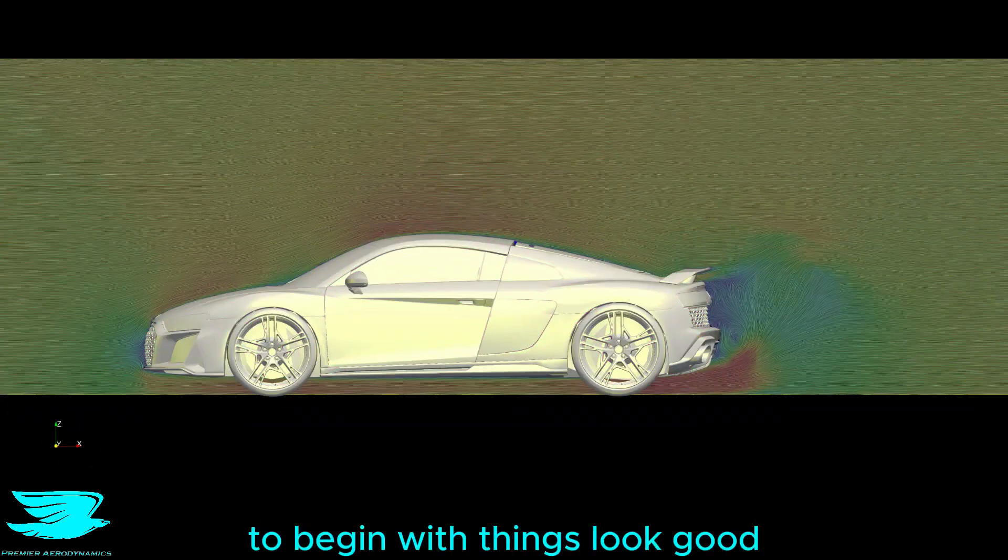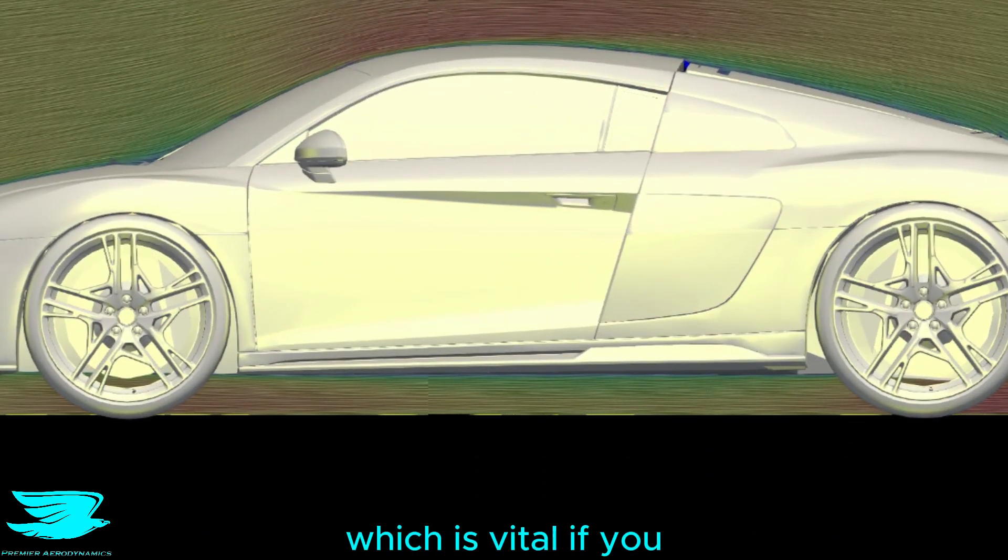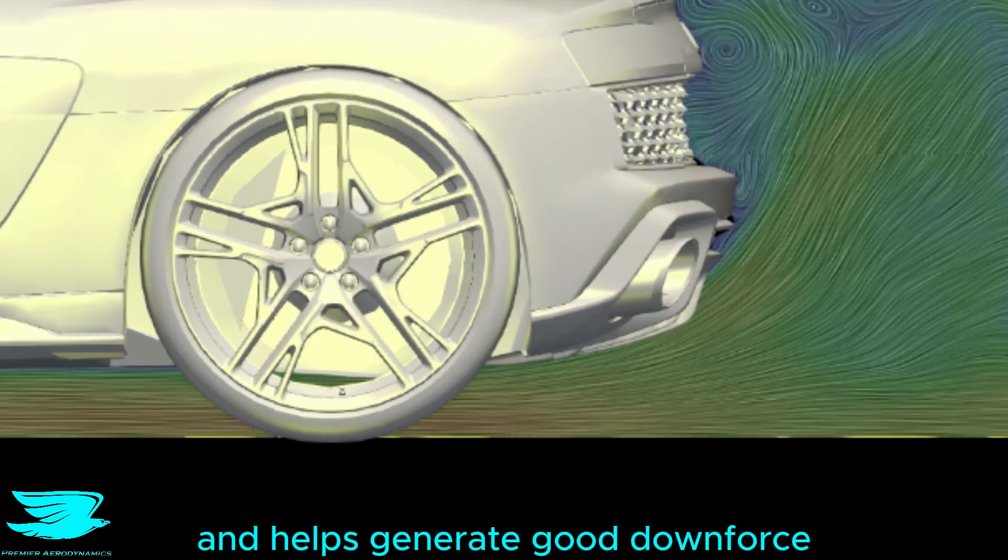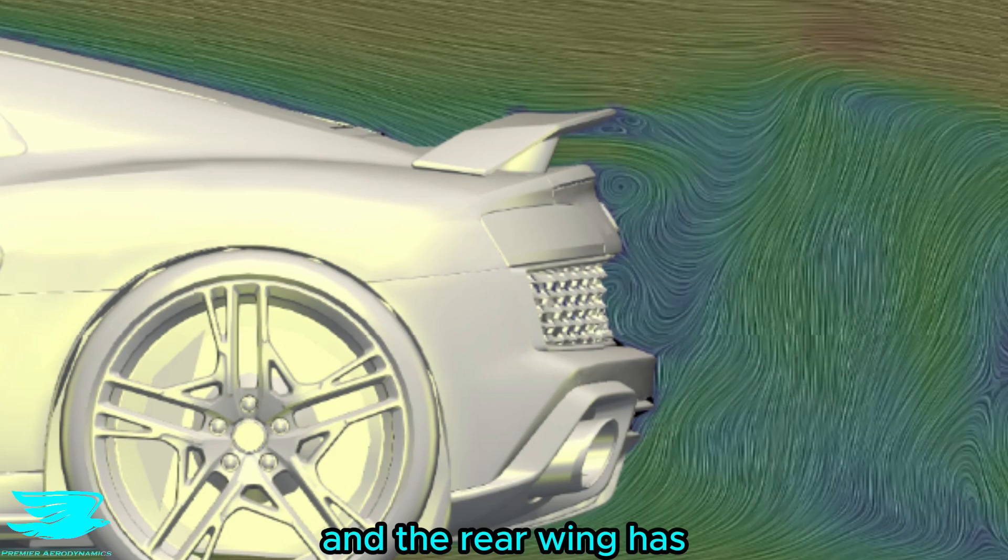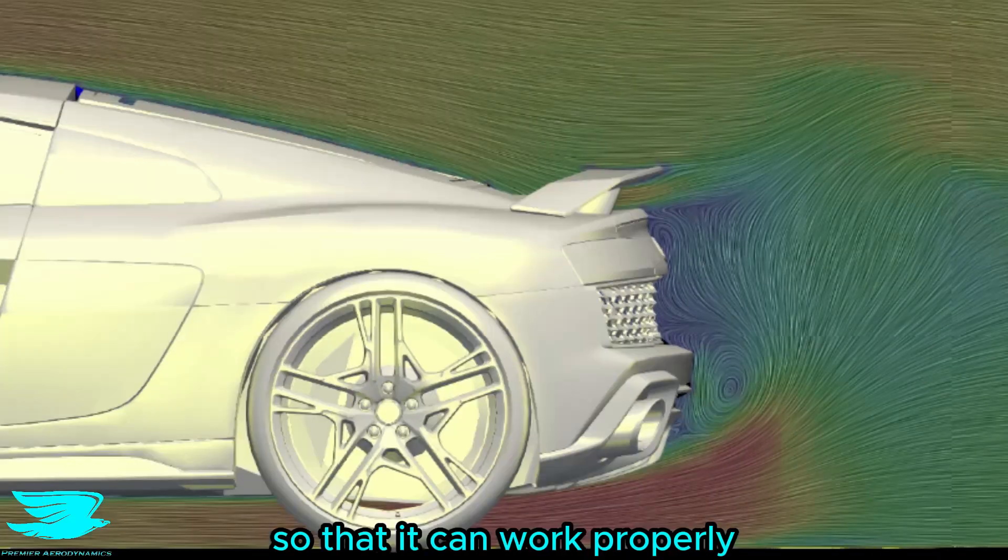To begin with, things look good. The flow over the roof and under the car both stay attached, which is vital if you want good aerodynamics. Even the diffuser is working very well as it kicks the flow up and helps generate good downforce. And the rear wing has been cleverly positioned so that it sees very clean flow so that it can work properly.